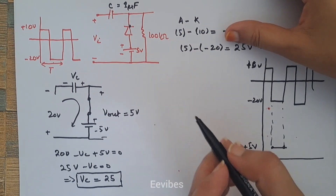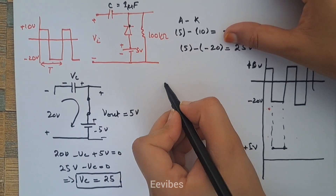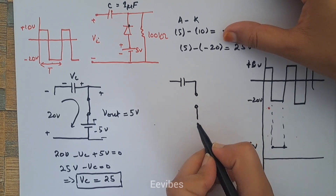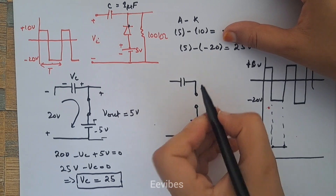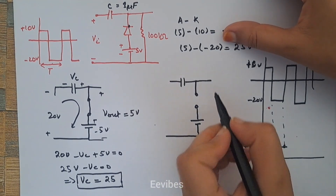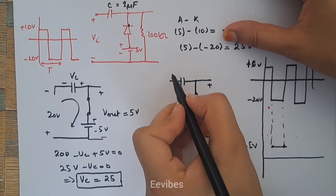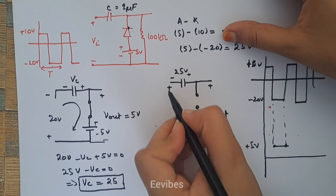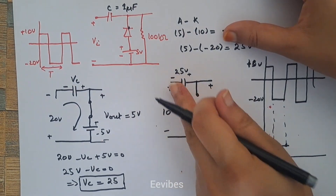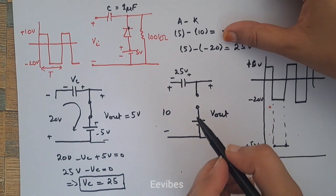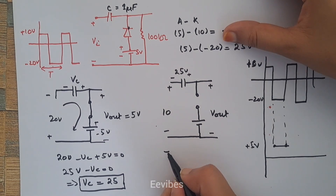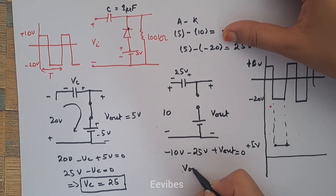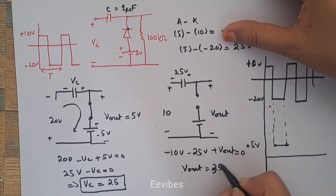When the positive cycle arrives, the diode will be reverse biased and can be replaced with an open circuit. In that case we apply KVL again to determine V_out: minus 10 volts minus 25 volts plus V_out equals 0 volts, which gives V_out equal to 35 volts.